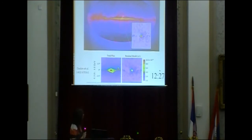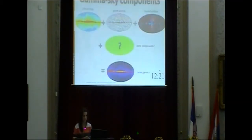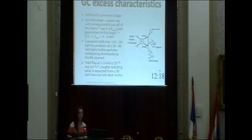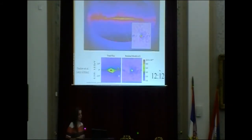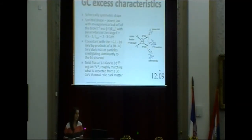This is where this excess in gamma rays comes from. Some of the main characteristics of this excess are given here. The morphological shape is spherical, and when this was first claimed it was not a very robust claim, but in later papers it has been confirmed to be definitely spherically symmetrical. It has a very intriguing spectral shape — not more than a power law with an exponential cut-off, as you can see here given in this equation, with the parameters given in this range.